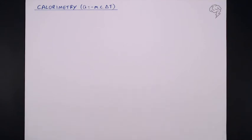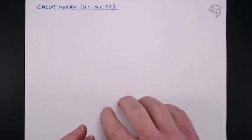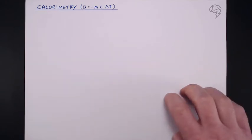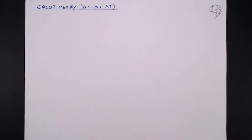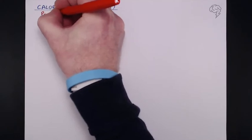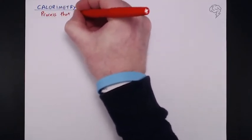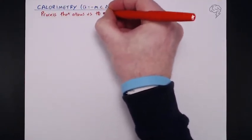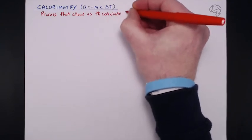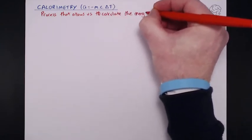Now this is linked directly to enthalpy or change in enthalpy delta H. Basically calorimetry is the process that we can use practically to measure energy changes in a reaction by measuring temperature change.